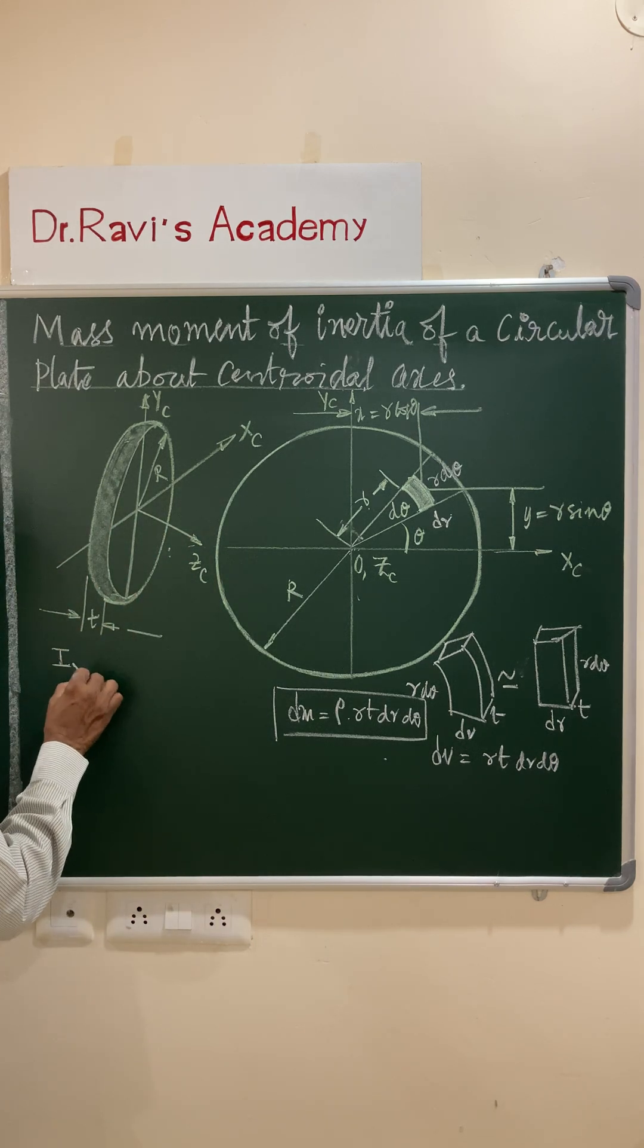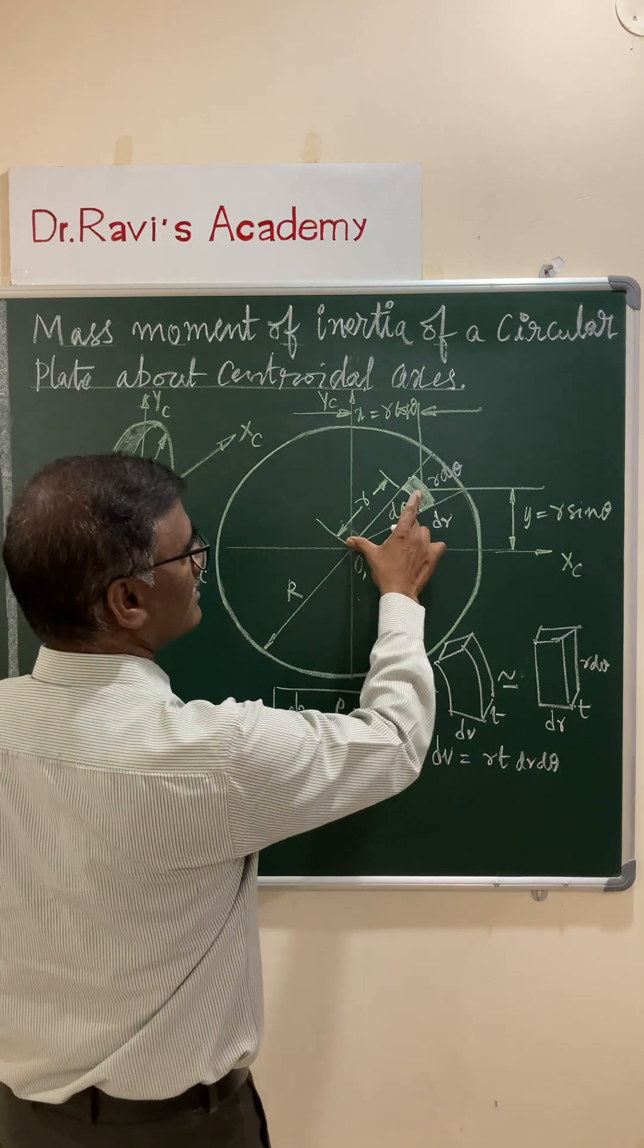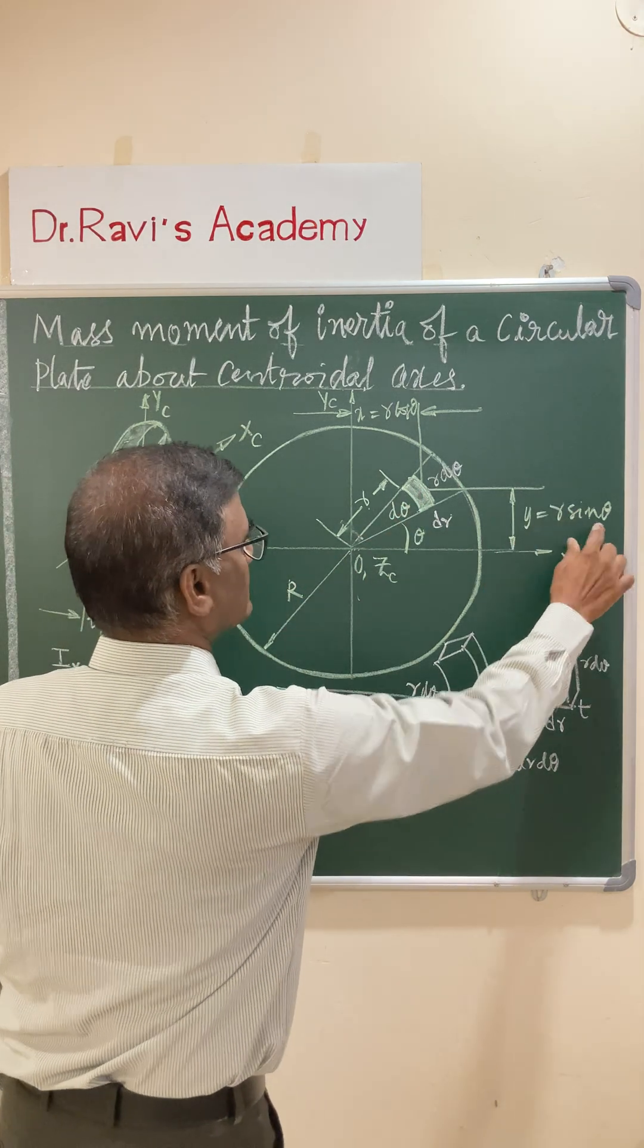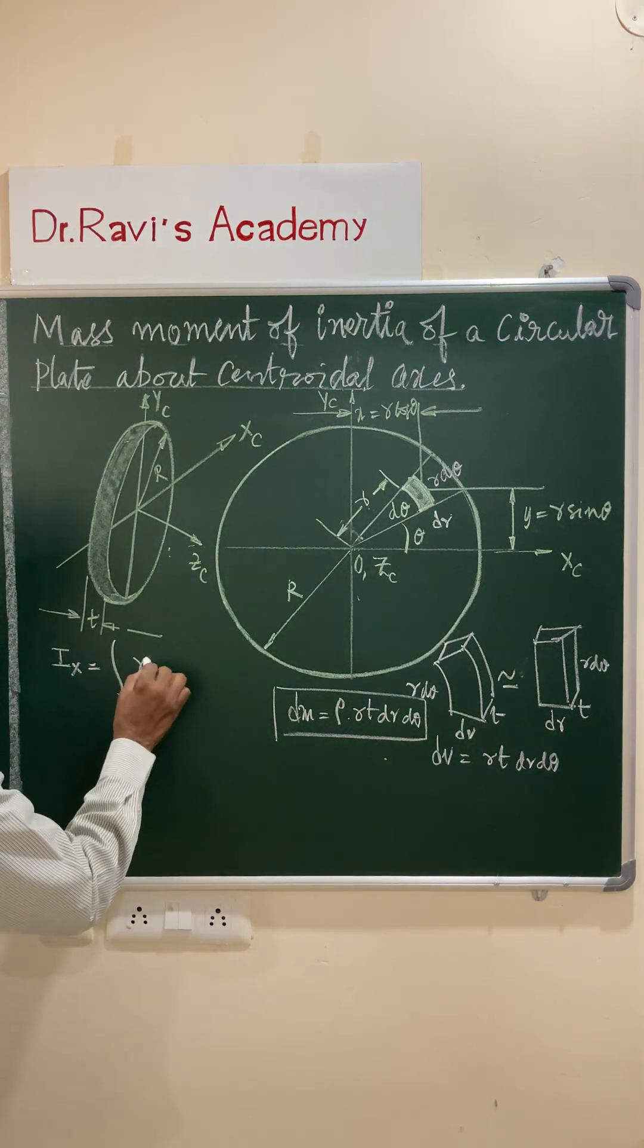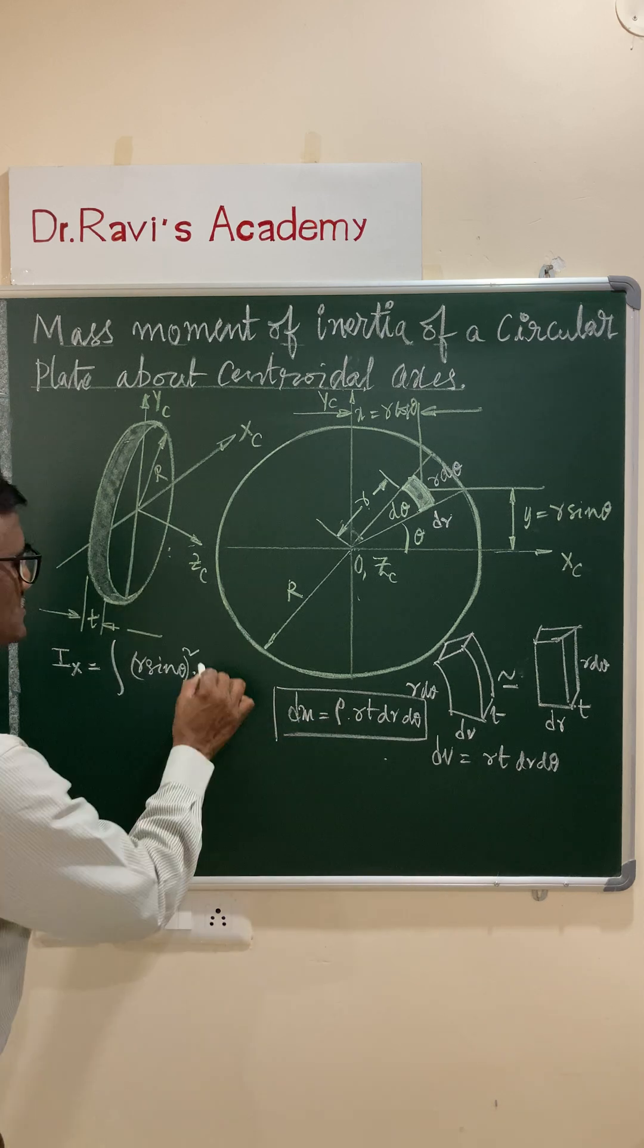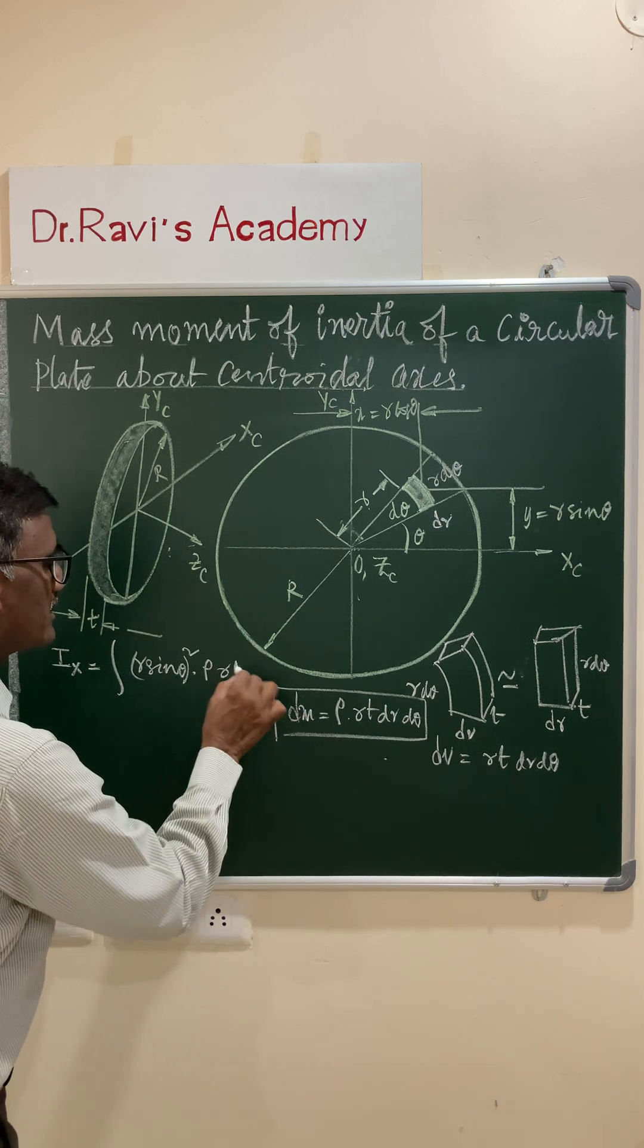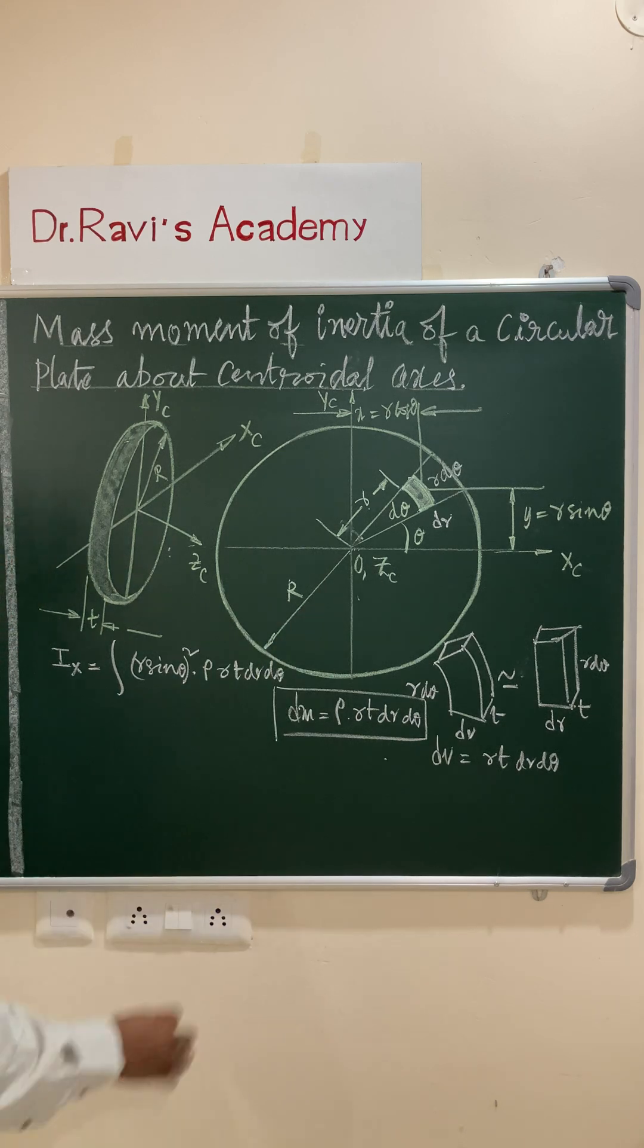Now, let us write down the expression for ix moment of inertia about x-axis. This distance is r and this is y is equal to r sin theta, r sin theta whole square into dm. dm is rho r t dr d theta. This is a double integral element.